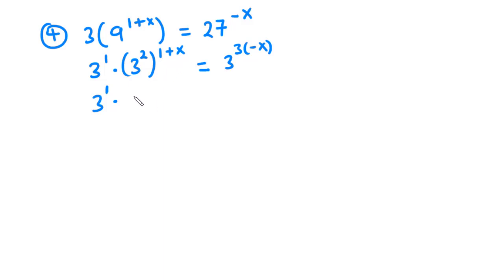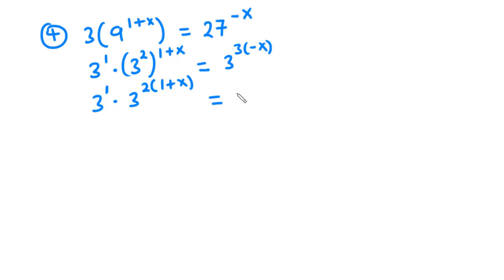So that is going to be 3 exponent 2 into bracket 1 plus x, which is equal to 3 exponent negative 3x.